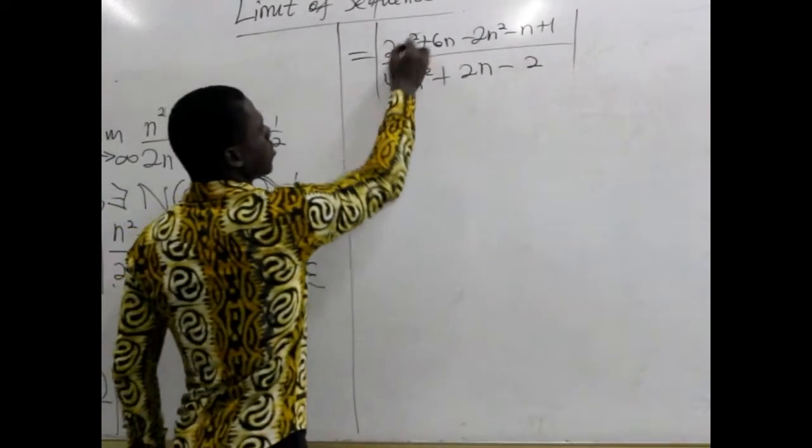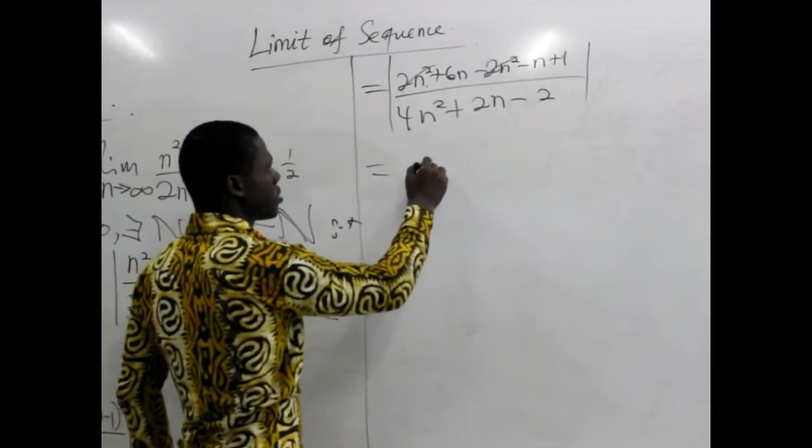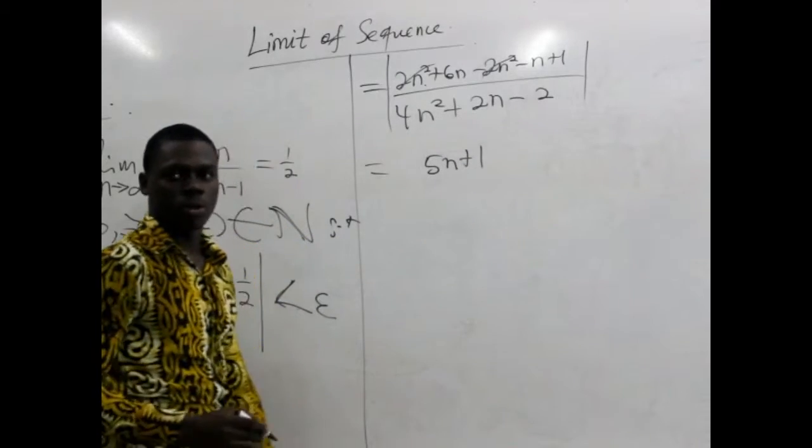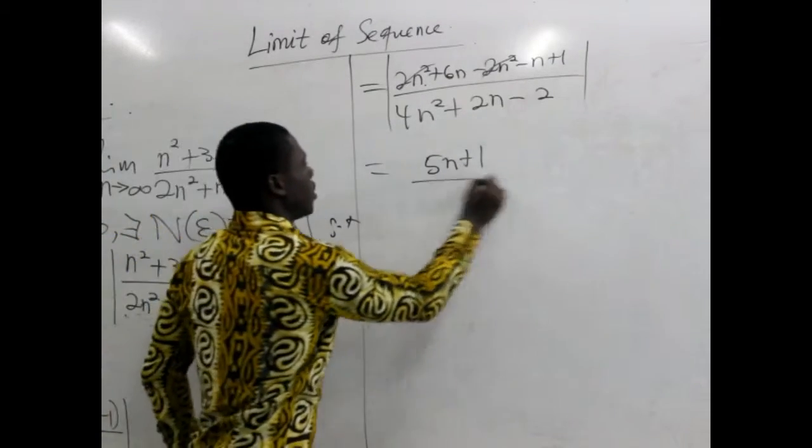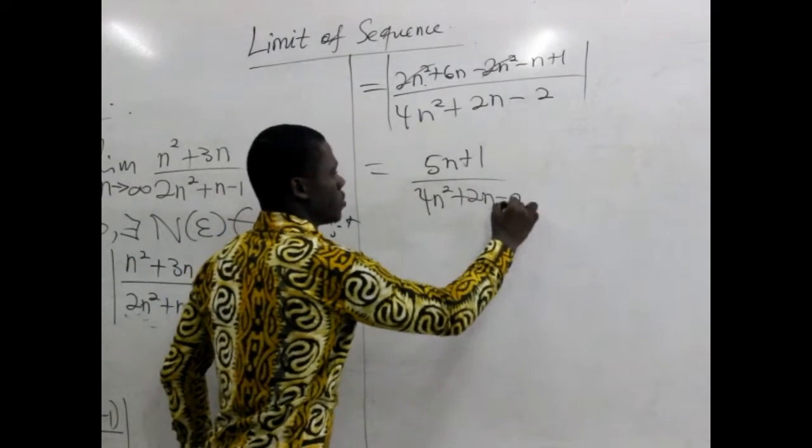Now, realize that this and this will cancel, giving us this minus n, this gives us 5n plus 1. And then divided by 4n squared plus 2n minus 2.